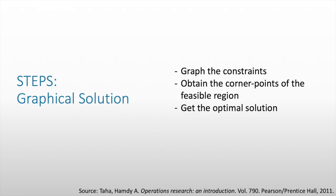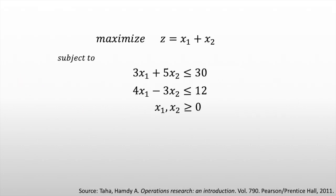Let's work through an example. We have this linear program with two variables, x1 and x2, and we want to maximize z, which is equal to x1 plus x2. It is subject to three constraints: 3x1 plus 5x2 is less than or equal to 30; 4x1 minus 3x2 is less than or equal to 12; and non-negativity constraints where x1 and x2 should be greater than or equal to 0.